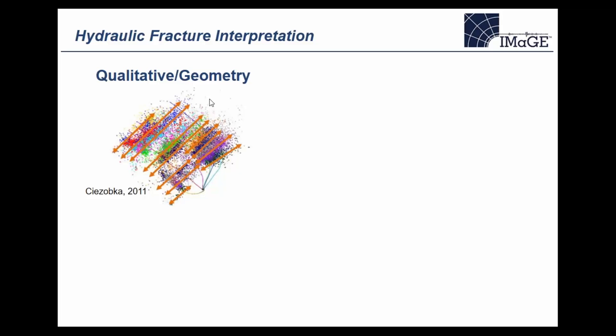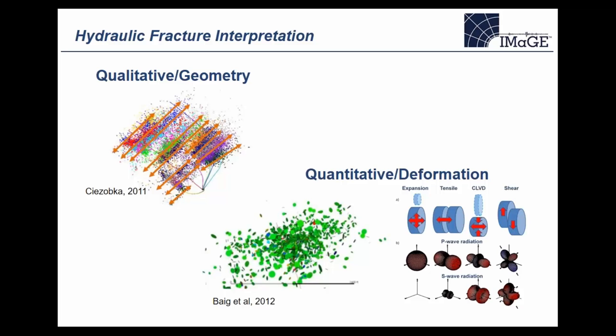Looking at interpretation of hydraulic fractures: most interpretation — the so-called 'dots in the box' type interpretation — is qualitative, looking at geometric effects. There's increasing interest in collecting source mechanisms — so-called moment tensor inversion — to understand how the rock breaks (shear, opening) and use that information to define fracture planes associated with individual microseismic events. An example from Western Canada shows events as a series of disks instead of dots, giving a sense of a microseismic fracture image.